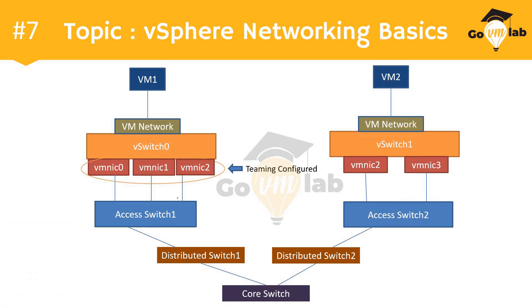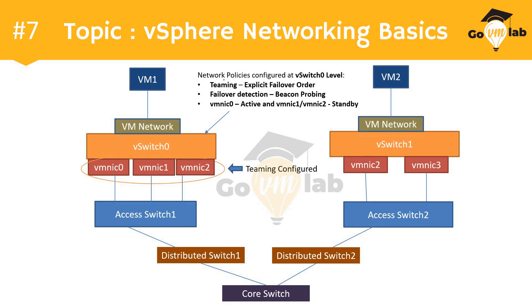Now let's see what network policies the vSphere administrator has configured here. At vSwitch zero level, they have configured a teaming policy — which is expected when a switch has more than one uplink. The second important thing is the teaming policy itself: the administrator configured explicit failover order. This means we are not talking about load balancing or traffic distribution across uplinks — we are talking about failover order. The administrator defined VMNIC zero as the active adapter, and VMNIC one and VMNIC two as standby adapters.